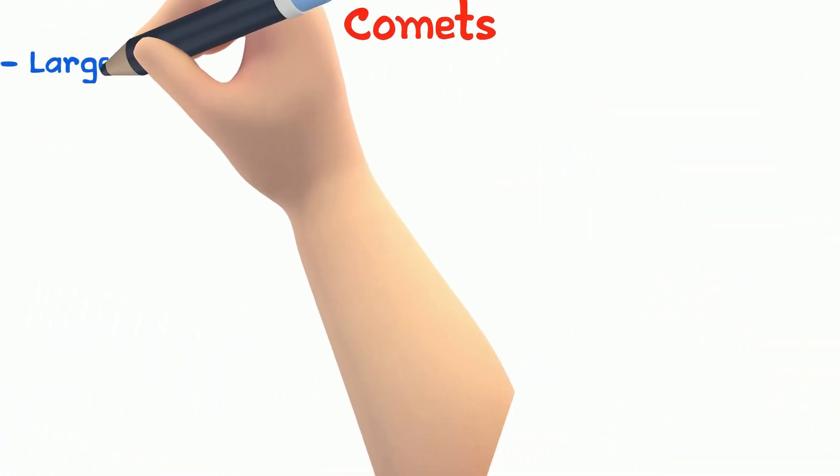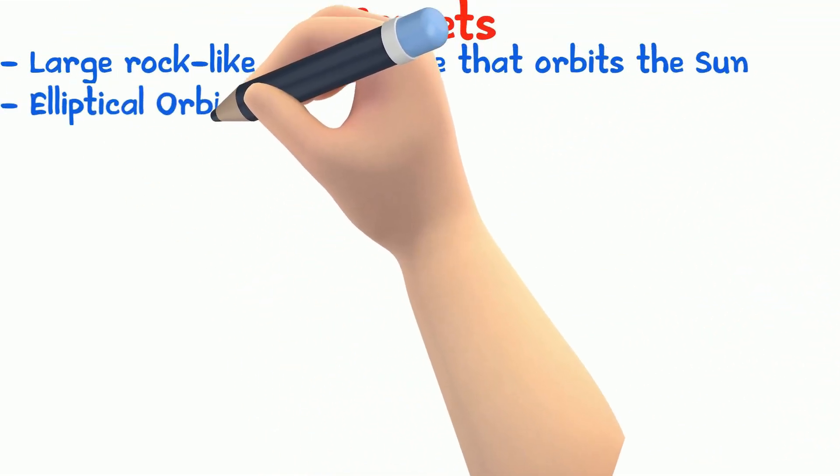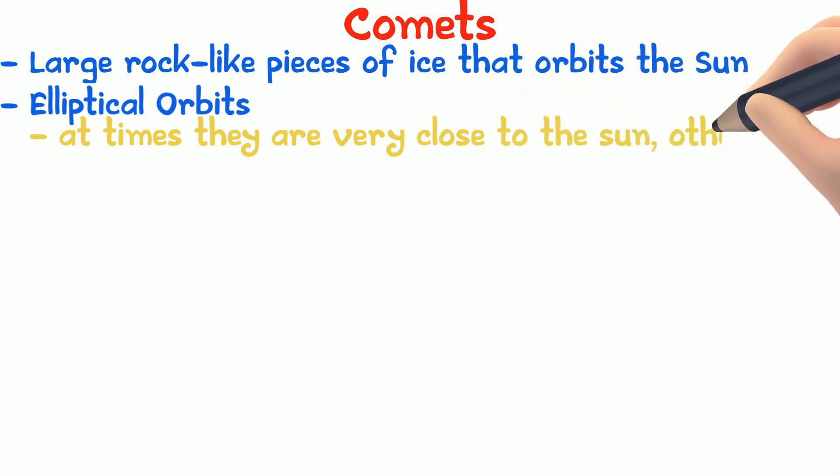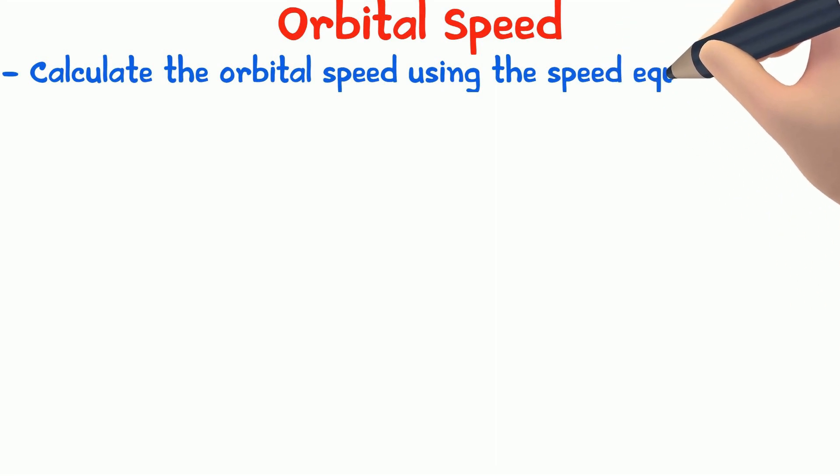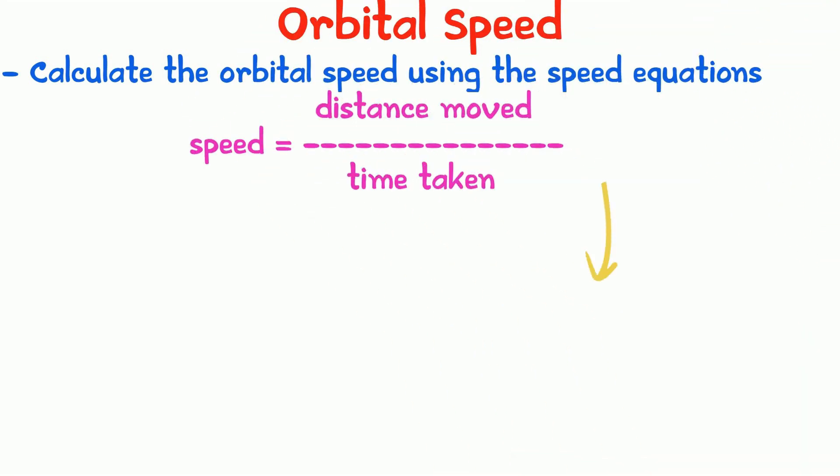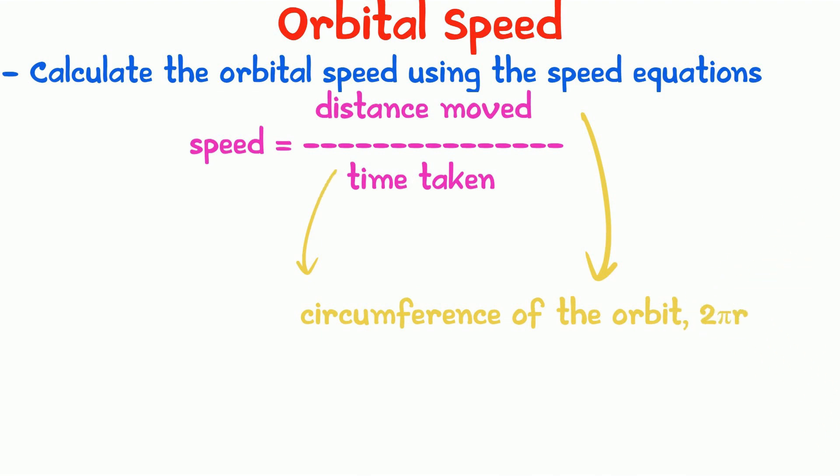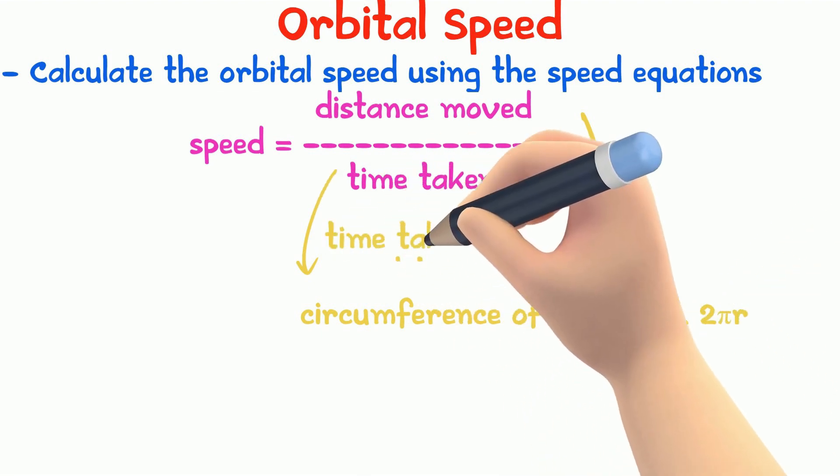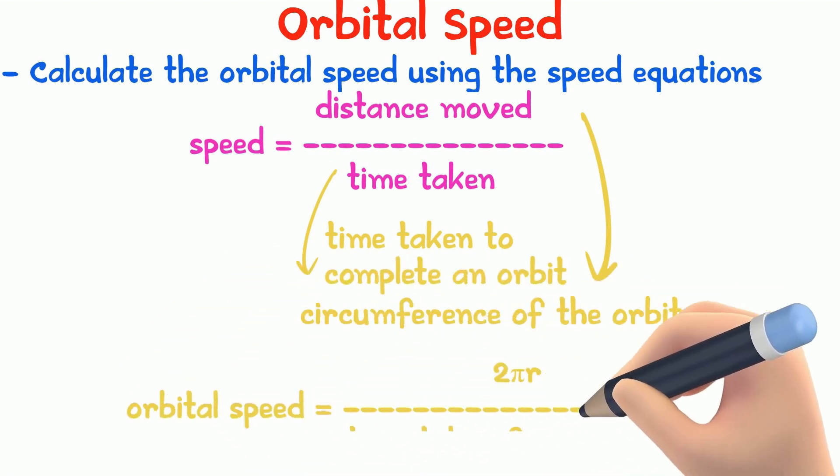Comets are large rock-like pieces of ice that orbits the sun. They have elliptical orbits. So at times, they are far away from the sun and at other times, they are very close to the sun. Orbital speeds of planets and satellites can be calculated using the speed equation. For distance moved, you must take the circumference of the orbit, so 2 pi r. And for the time period, it is the time taken to complete one orbit. So orbital speed is 2 pi r over time period.